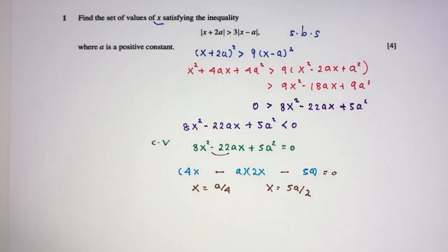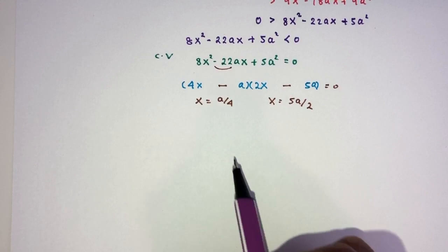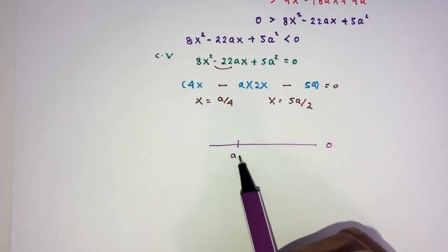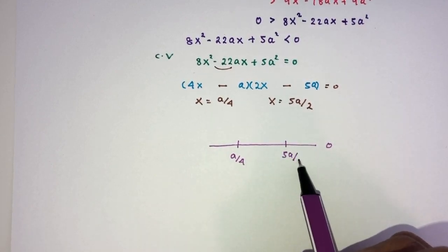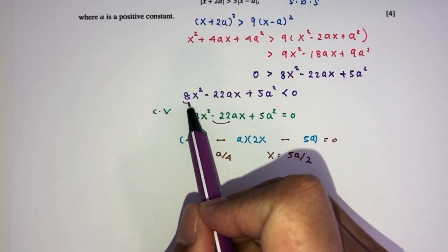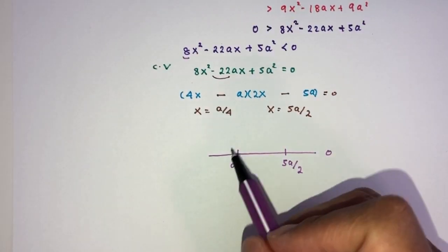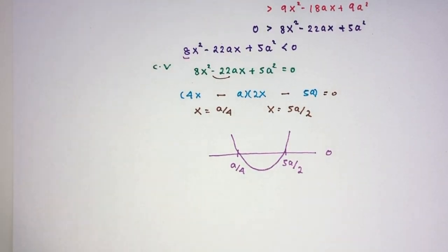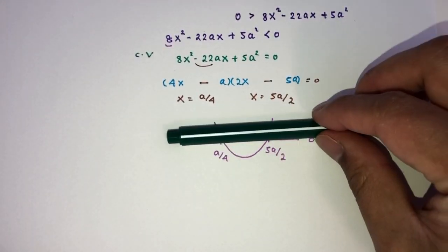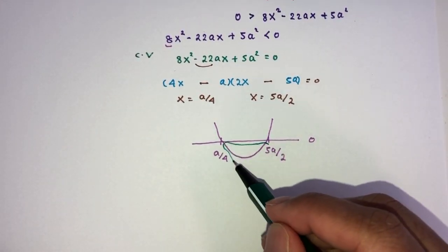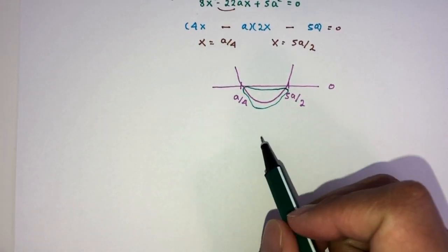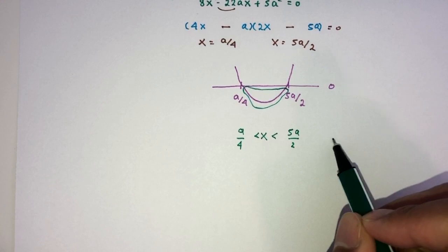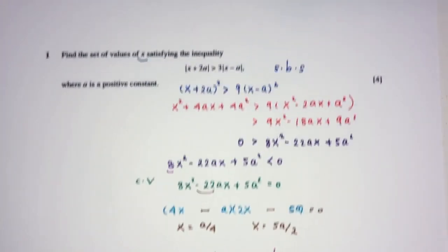So these are the critical values. We will have to use those to find the set of values for x for which our equation is defined. 0, this is the first value. This is the other value. Now, as you can see, this one is a positive value. It will be a minimum curve. Fair enough, right? Now, what's next? It has to be less than 0. So, below, as you can see, below will be only between those two. So, x will have to be between the values of a/4 and then 5a/2. And this is your answer for question number 1.